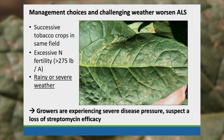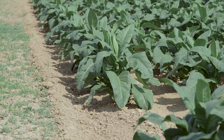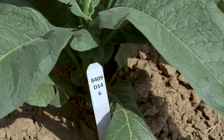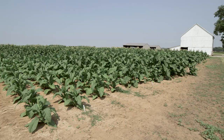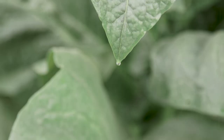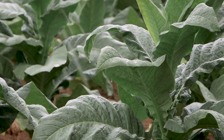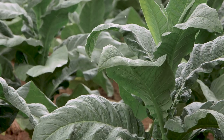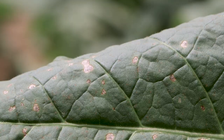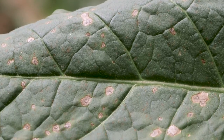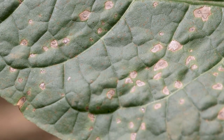Bacterial diseases are also very reliant on conducive environmental conditions. During a hot, dry summer when we don't get a lot of rainfall, we typically don't see a lot of bacterial disease. By the same token, during a summer with a lot of wet, rainy weather — especially if we get hailstorms — we see flare-ups of bacterial disease, and it's no different with angular leaf spot in dark tobacco.